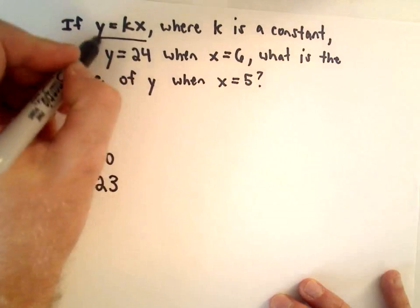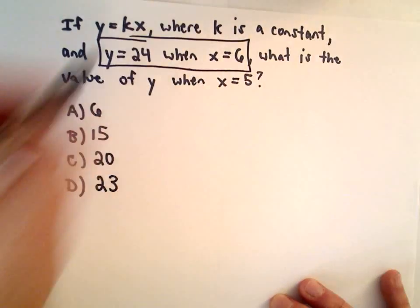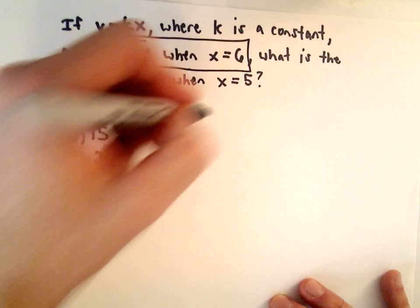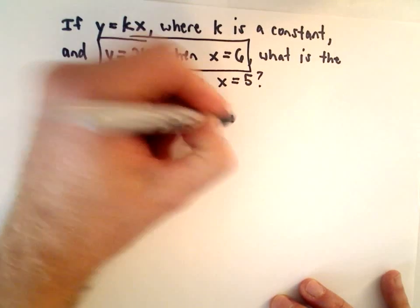So let's use this info y equals 24 when x equals 6. I'm going to put that on the left side of my equation. So we've got 24 for y.